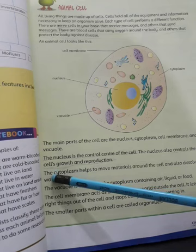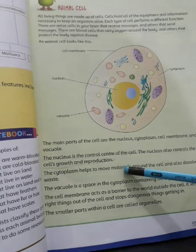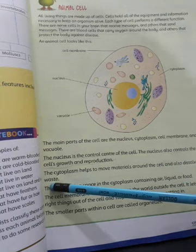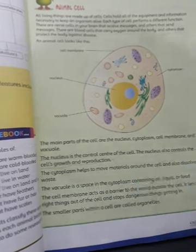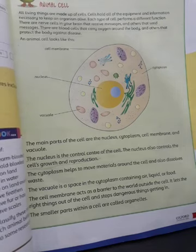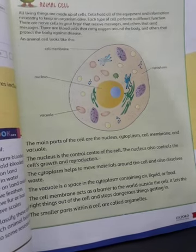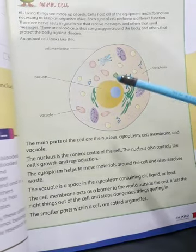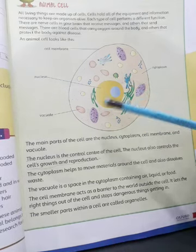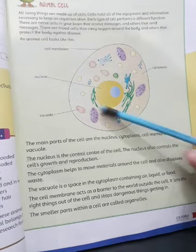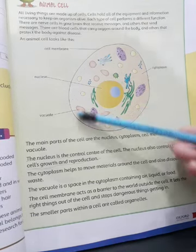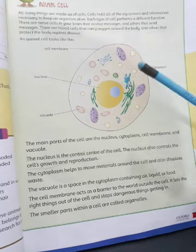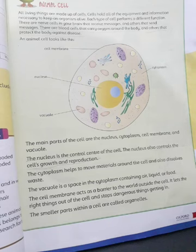Cytoplasm helps to move materials around the cell and dissolves waste. It is a jelly-like substance in which all the organelles are floating. Waste materials are pushed out through the vacuole.